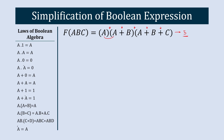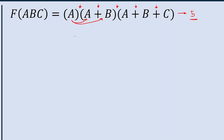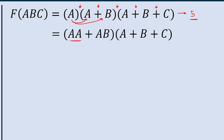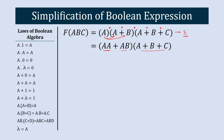In step 1 we are going to multiply the first two terms. As a result we will get A·A plus A·B, and the remaining terms stay as they are. Now as per Boolean law, A·A is equal to A, so we can replace A·A with A. We get A plus A·B, into A plus B plus C.